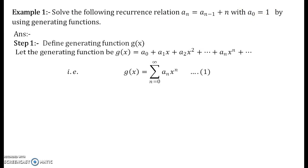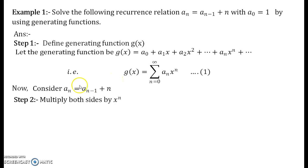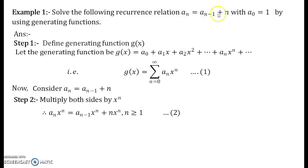Step 1: define the generating function. Step 2: consider the recurrence relation and multiply x to the power n on both sides. Once you multiply x to the power n on both sides, note whatever is the smallest suffix in the recurrence relation — that gives the condition you need to put. n will be greater than or equal to 1, or n greater than or equal to 2, and so on. That is where the condition begins.